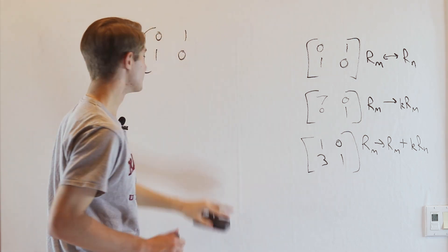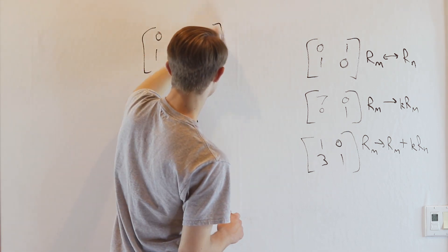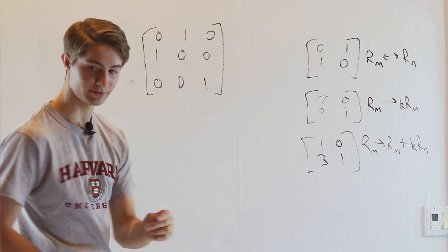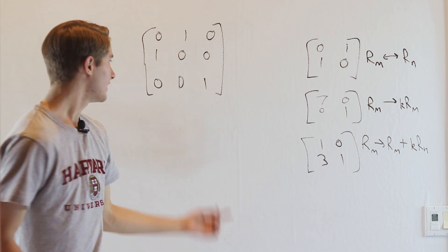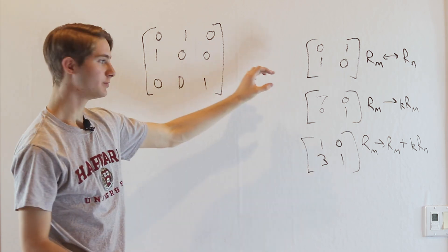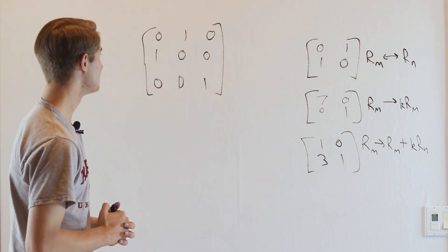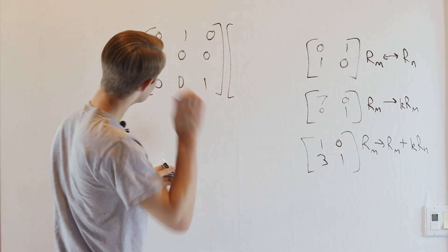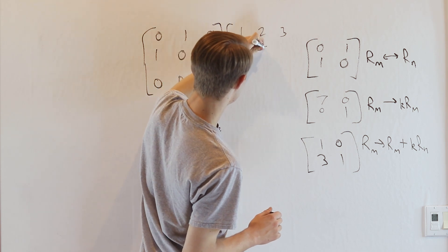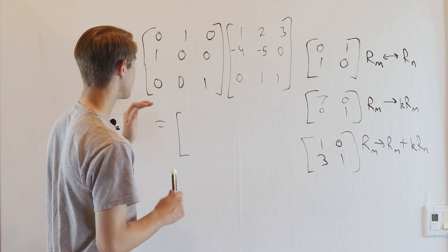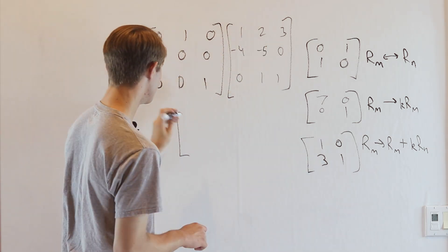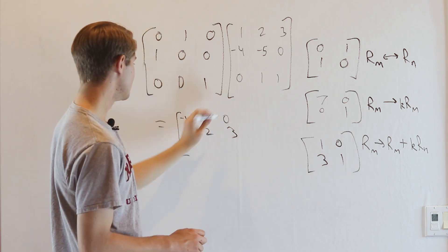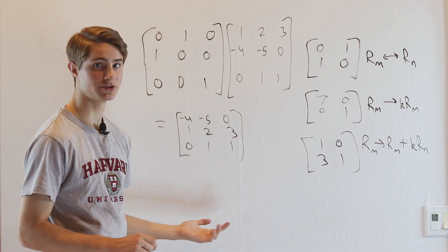We can extend this to a larger matrix. If instead of a 2x2 we take the 3x3 identity matrix and swap the first two rows, we get a 3x3 elementary matrix. The extra 1 in the third diagonal position means third row inputs go to third row outputs unchanged — the third row doesn't change at all. Multiplying this by [[1, 2, 3], [-4, -5, 0], [0, 1, 1]], the first row becomes [-4, -5, 0], the second becomes [1, 2, 3], and the third row stays [0, 1, 1]. That is the first type of elementary matrix.